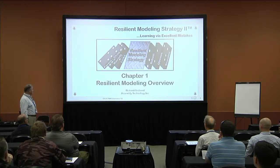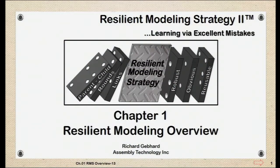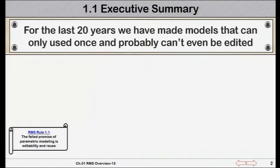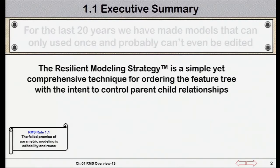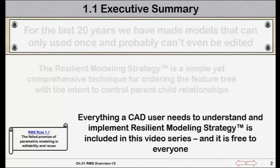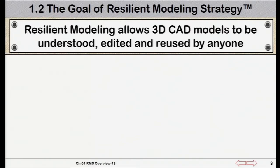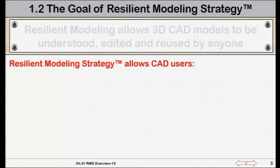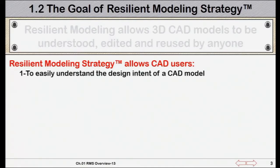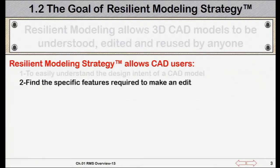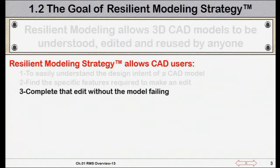The resilient modeling strategy is a simple yet comprehensive technique for ordering features with the intent to control parent-child relationships. Everything a CAD user needs to understand and implement the strategy is included in this video series, and it is free to everyone. The goal of resilient modeling is to establish a standard process by which 3D CAD models can be understood, edited, and reused by anyone — allowing anyone with overview knowledge of the CAD system to easily understand design intent, quickly find the features required for an edit, and complete that edit without the model failing.